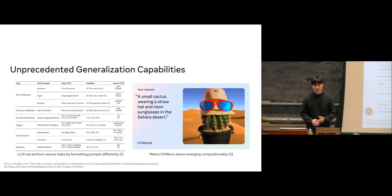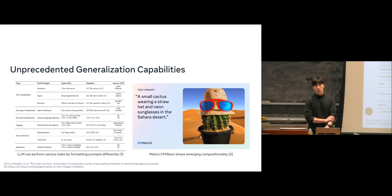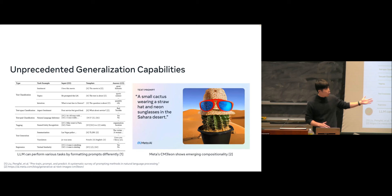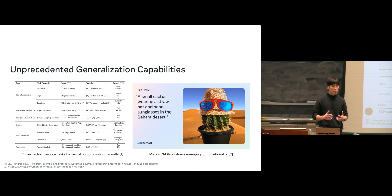Similarly, the generalization capability for text-to-image models is that you can train on all kinds of text-image pairs. The model learns concepts like 'desert,' 'sunglasses,' and 'cactus.' It most likely won't have seen an image of a small cactus wearing a straw hat near sunglasses, so it just learns what these concepts are and develops compositionality — the ability to create new images. Generalization is what we're going for.